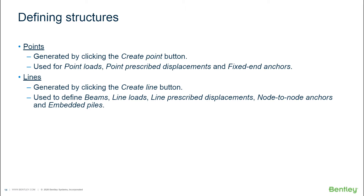By geometric point I mean just a single point at a specific location, but you can already create something that can be assigned on that point — for instance, a point load, which can be used to apply a specific load, or a point prescribed displacement to define where this specific point will move to, or even assign a fixed anchor. Don't worry about what the structural elements are right now — there will be an overview presented later today by Dennis, my colleague.